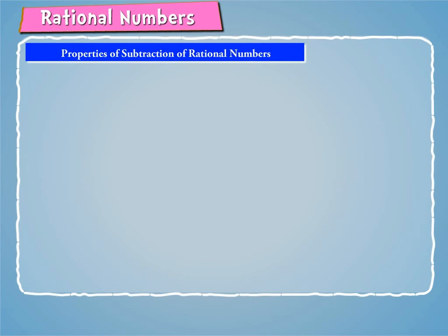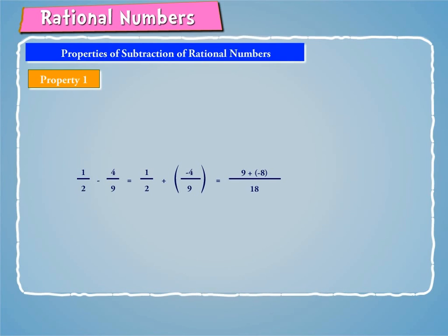Now we will discuss some of the properties of subtraction of rational numbers. Property 1: Let us consider the following example. 1/2 minus 4/9 is equal to 1/2 plus (−4/9), which equals 9 plus (−8) by 18, which equals 1/18, a rational number.